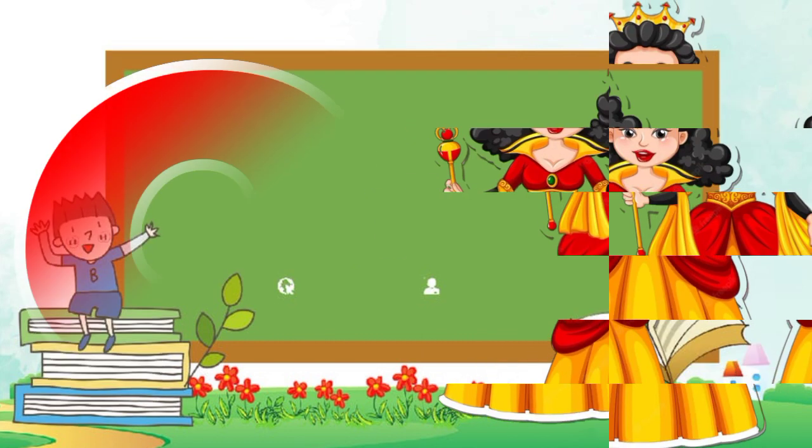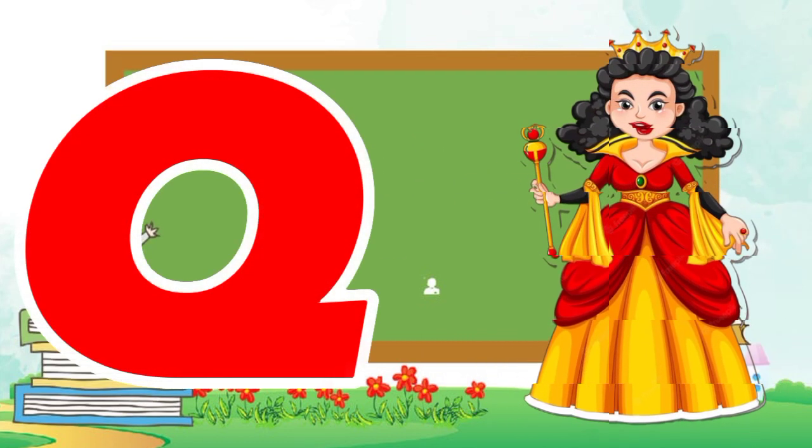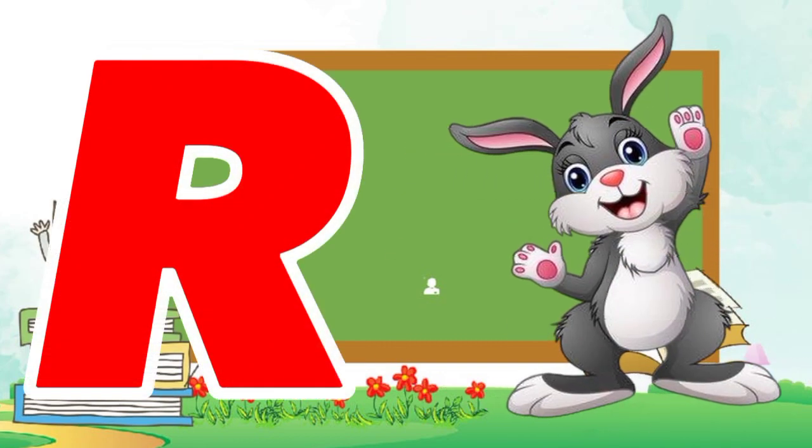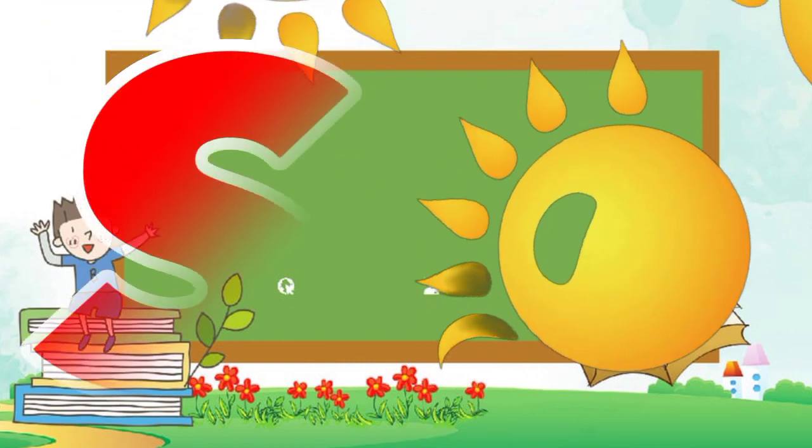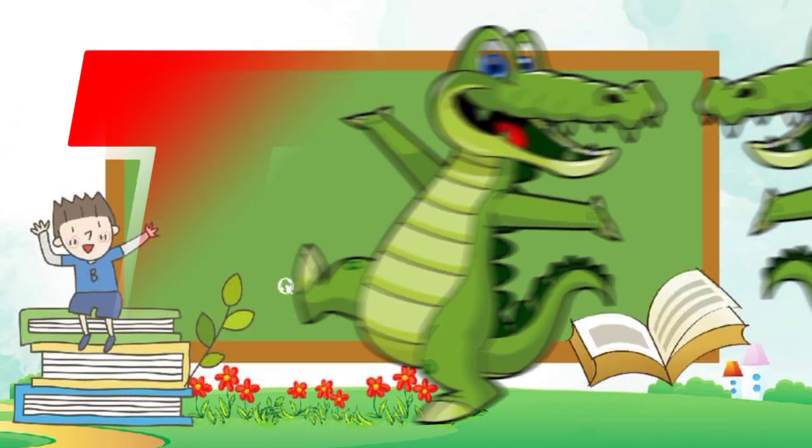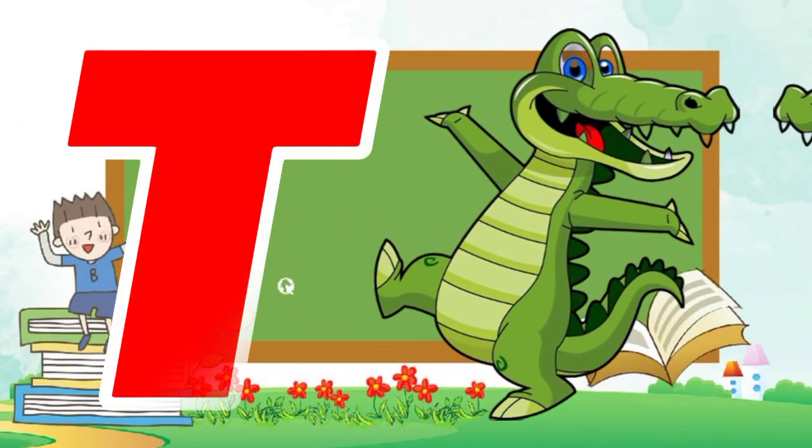Q is for queen, q-q-queen. R is for rabbit, r-r-rabbit. S is for sun, s-s-sun. T is for toad, t-t-toad.